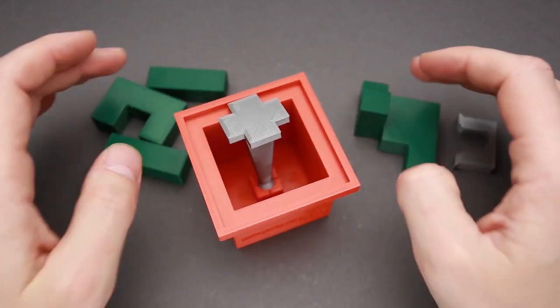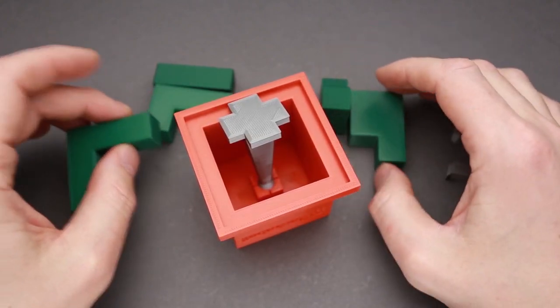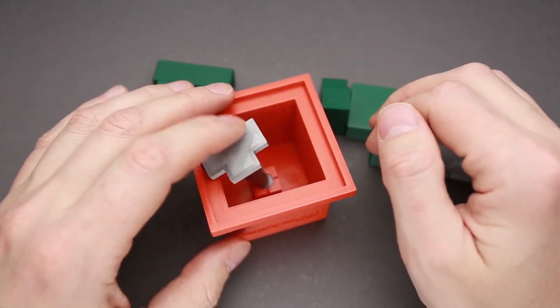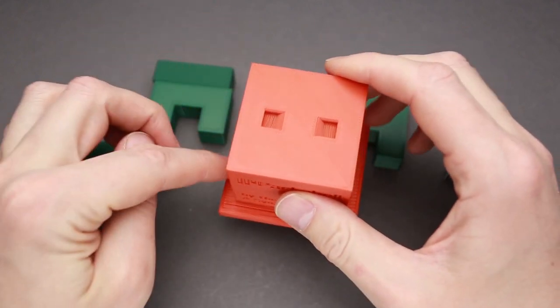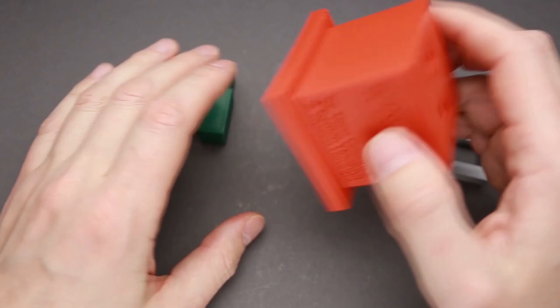The objective of the puzzle is to fit all five pieces inside the bell in such a way that when you flip it upside down, all the parts will stay inside and none of them will fall out.